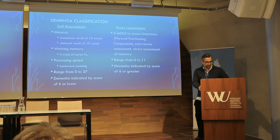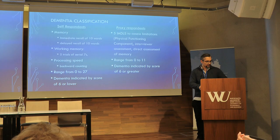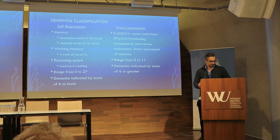For proxy respondents, they are asked to assess whether there are five IADLs — this is a functional component — along with an interviewer assessment of how difficult it was to conduct the interview, and a direct assessment by someone in the household who knows the respondent. You get a score of 0 to 11, and a score of 6 or greater indicates dementia.